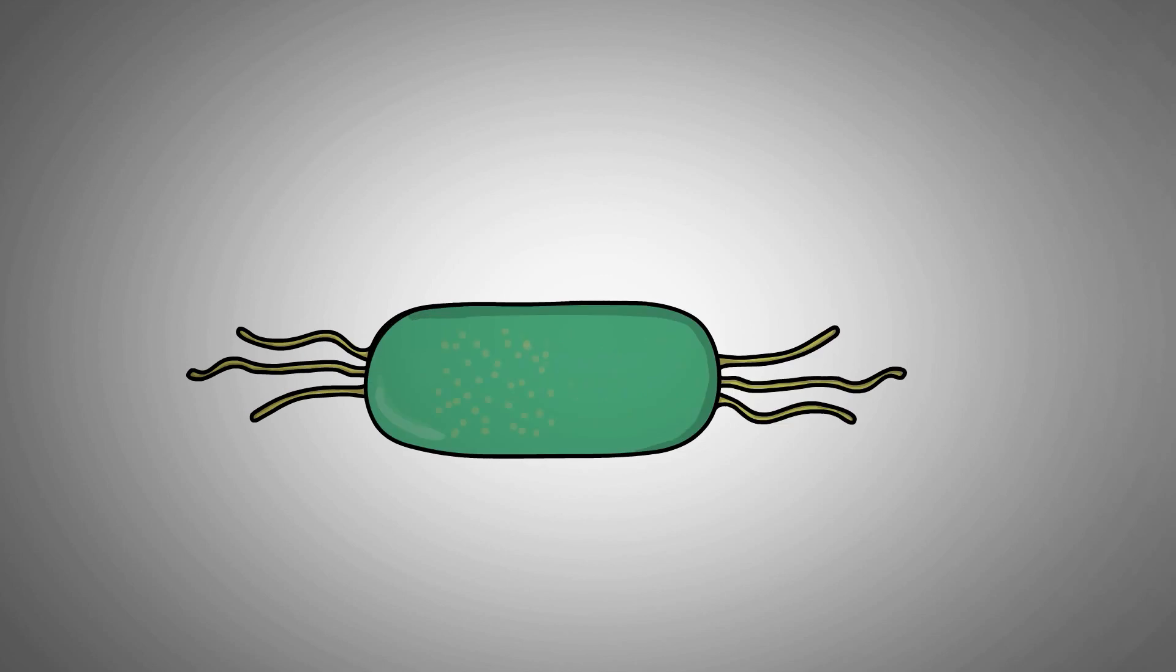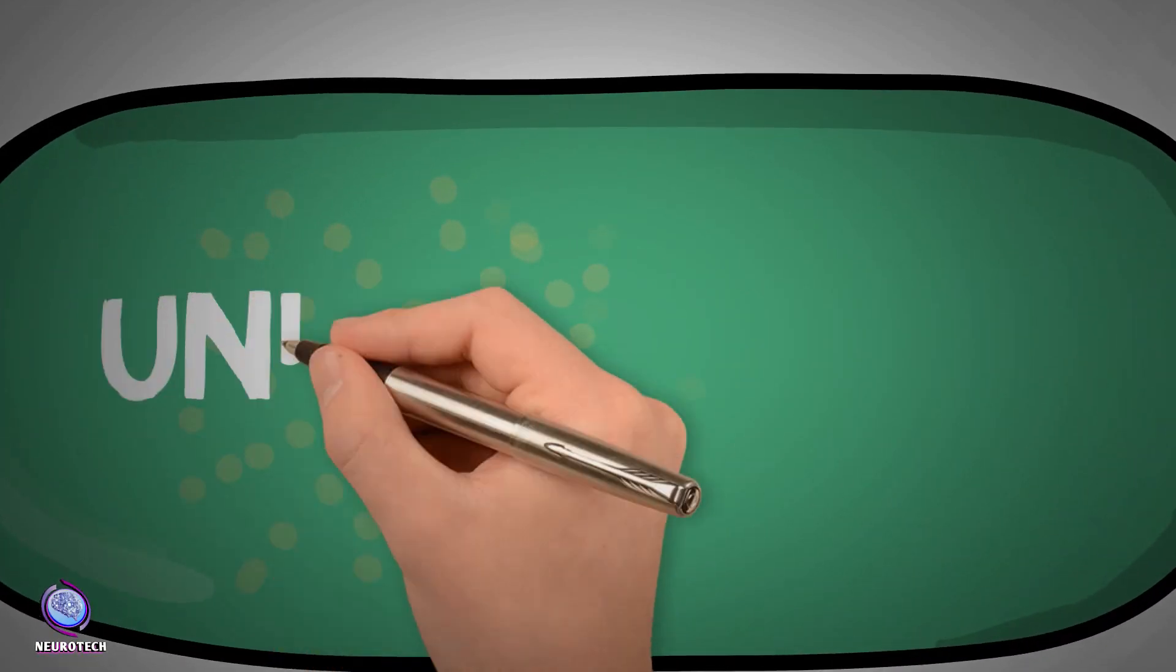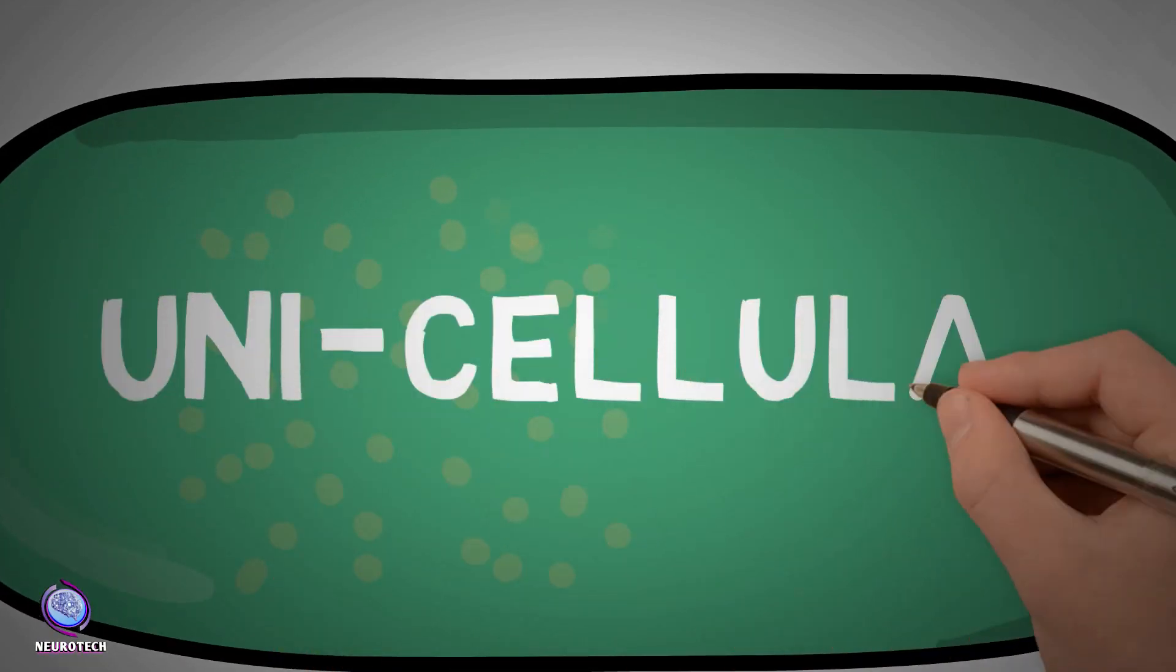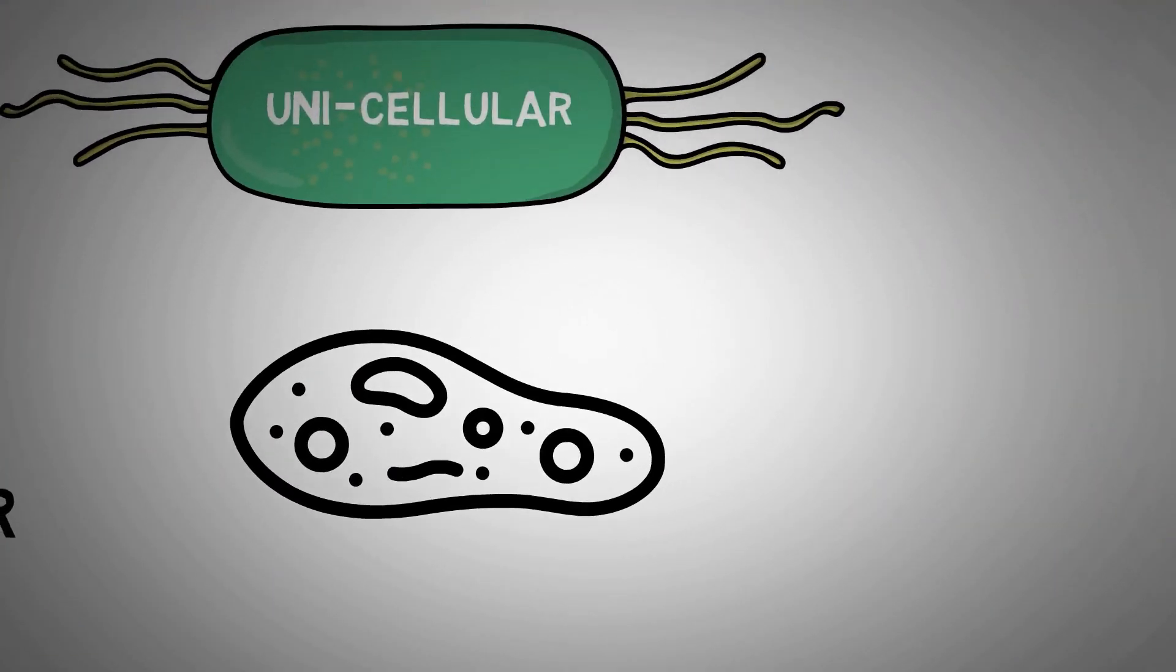While others, consisting only of single cells, are called unicellular, like bacteria and protozoa.